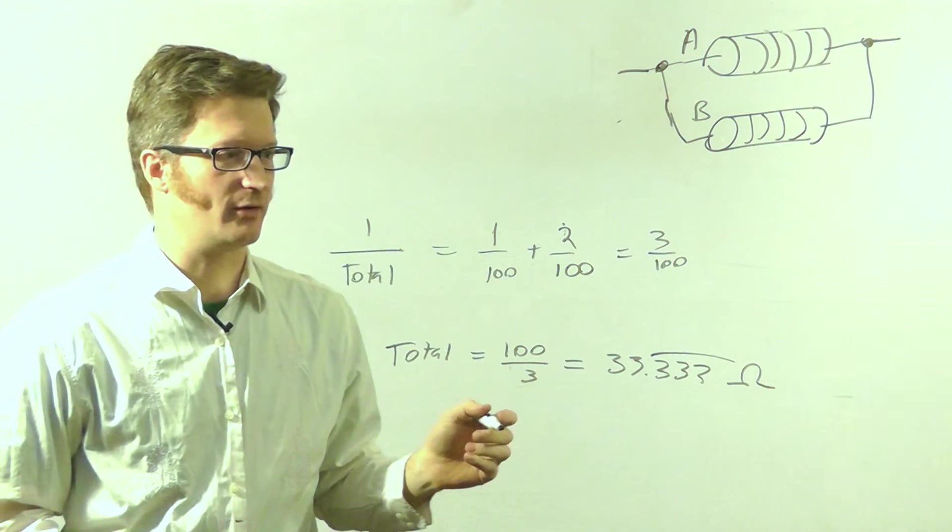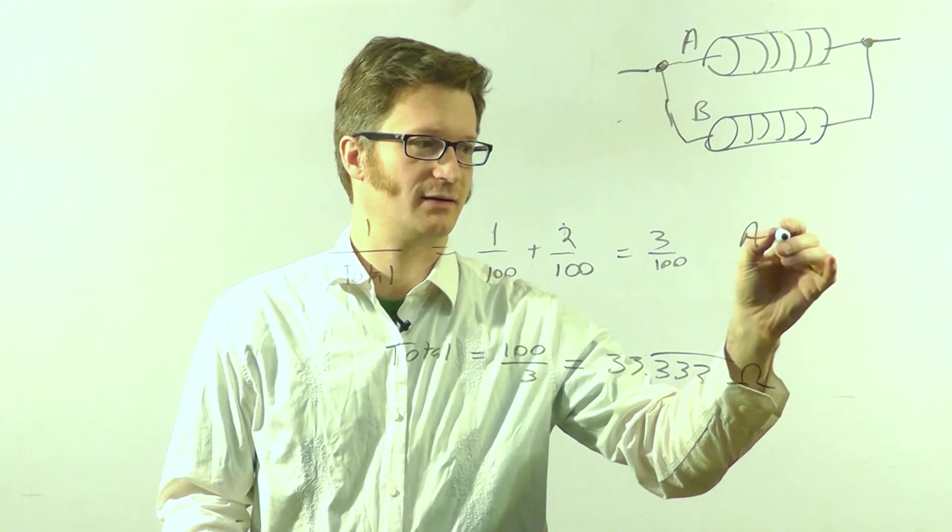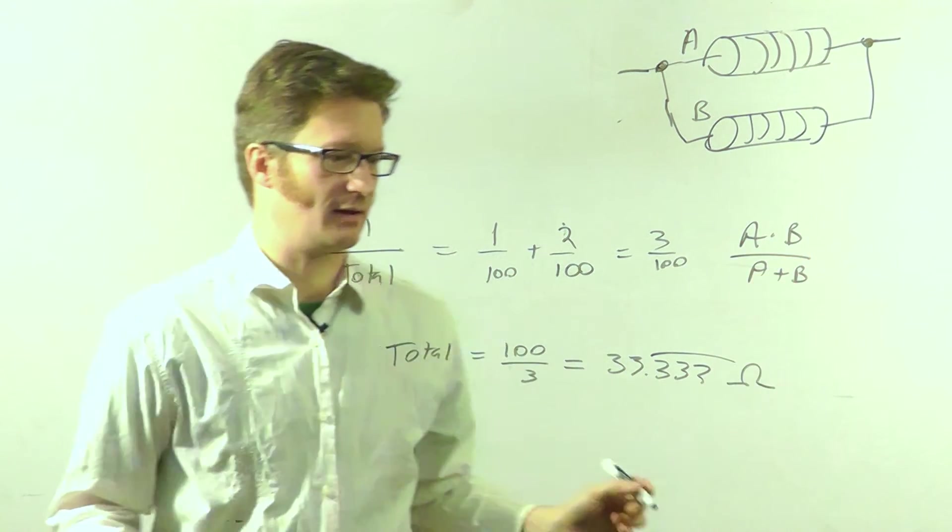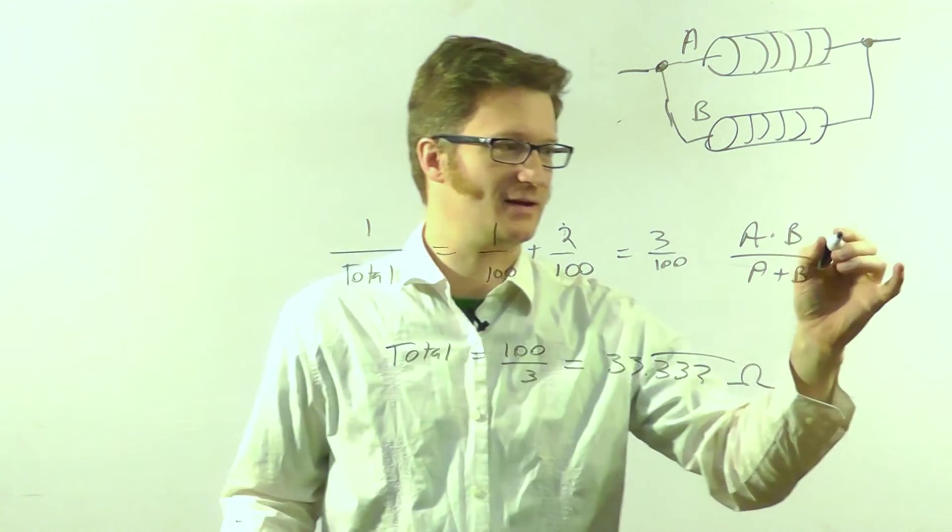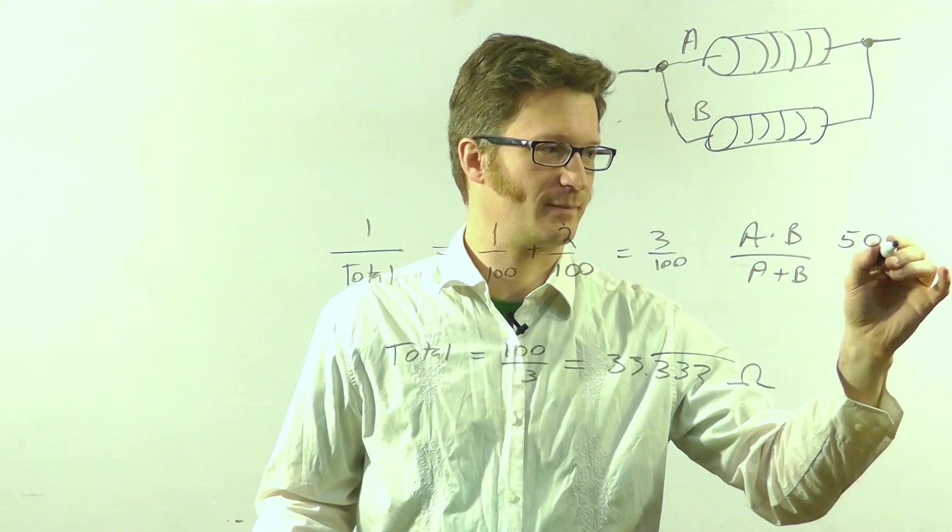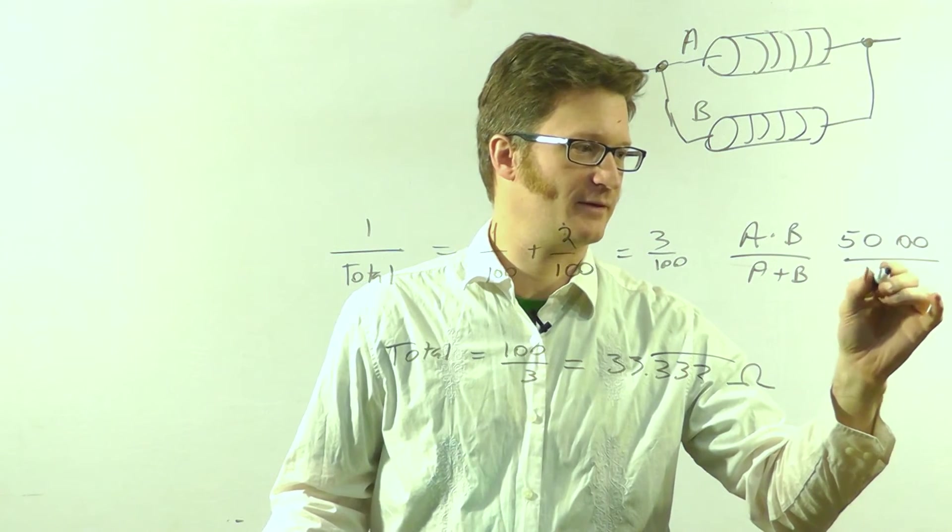For two resistors also, it is A times B over A plus B. And let's just make sure that I'm saying that right. A times B would be 50...